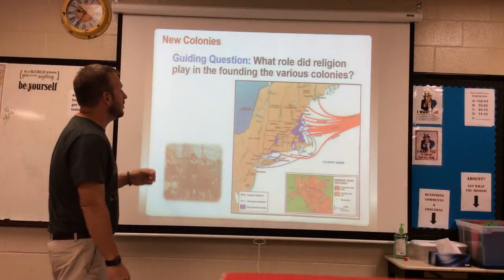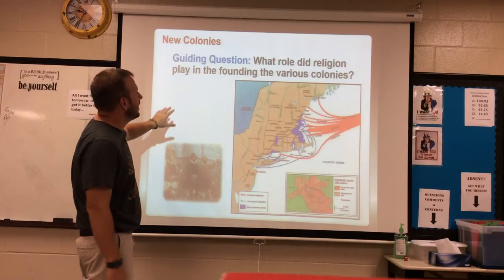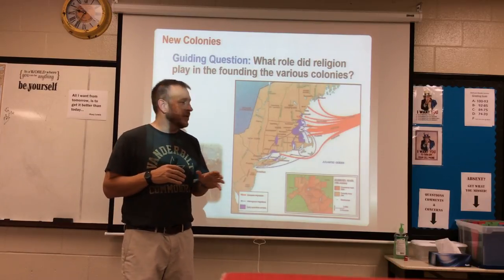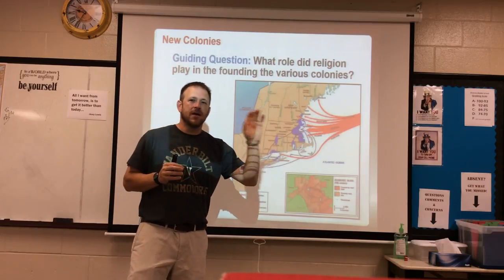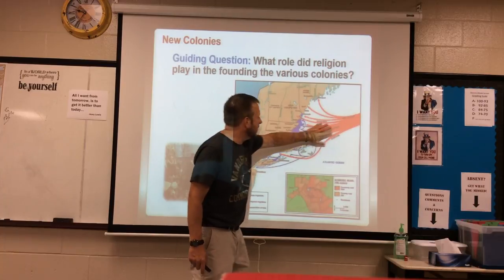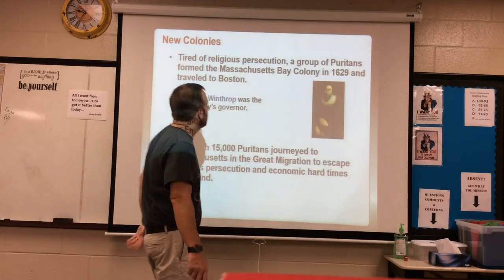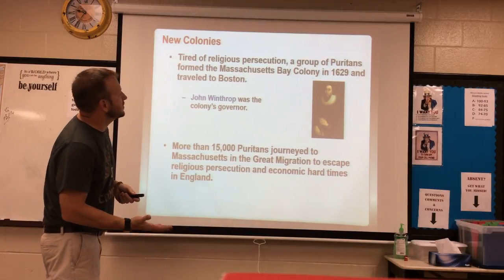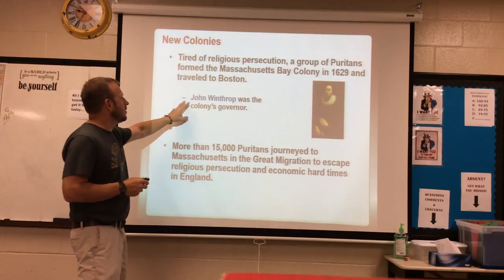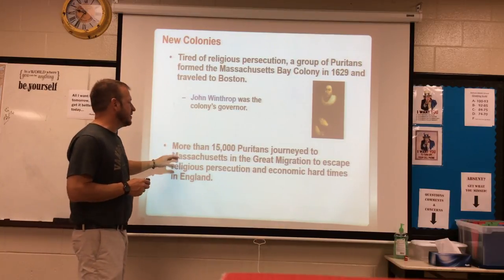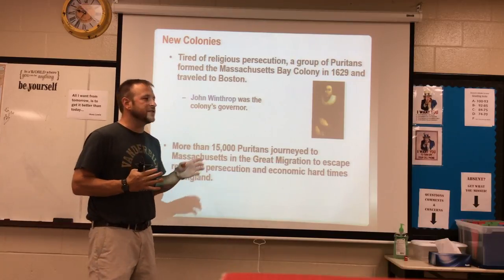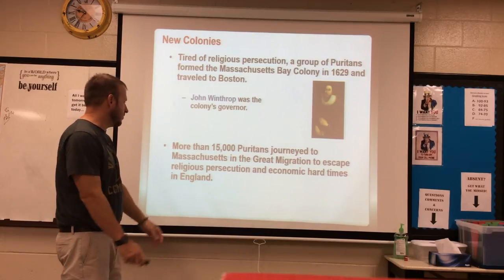It started with Plymouth, but then it spread. What role did religion play in the founding of the various colonies? Many people in England were unhappy with the way things were going there, and when they heard about the chance to start a new life, many took it. Tired of religious persecution, a group of Puritans formed the Massachusetts Bay Colony in 1629 and traveled to Boston. John Winthrop was the colony's governor, and more than 15,000 Puritans journeyed to Massachusetts in what's called the Great Migration — 15,000 people crossing the ocean to escape religious persecution.